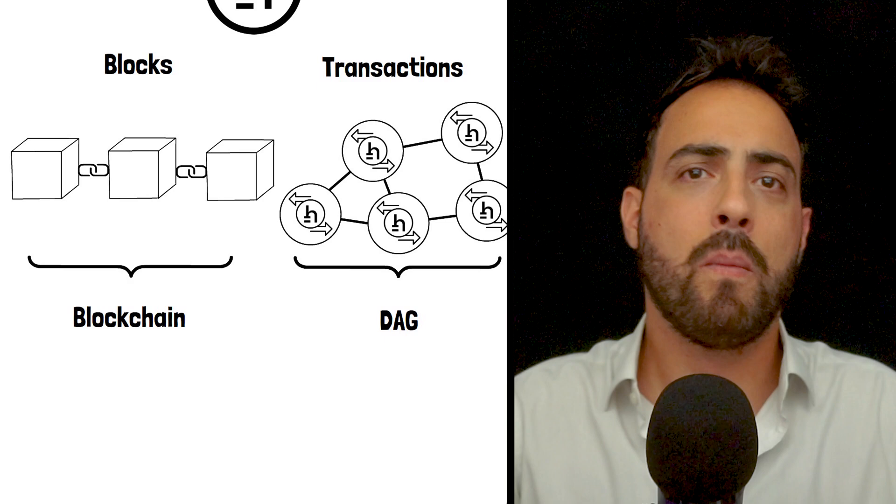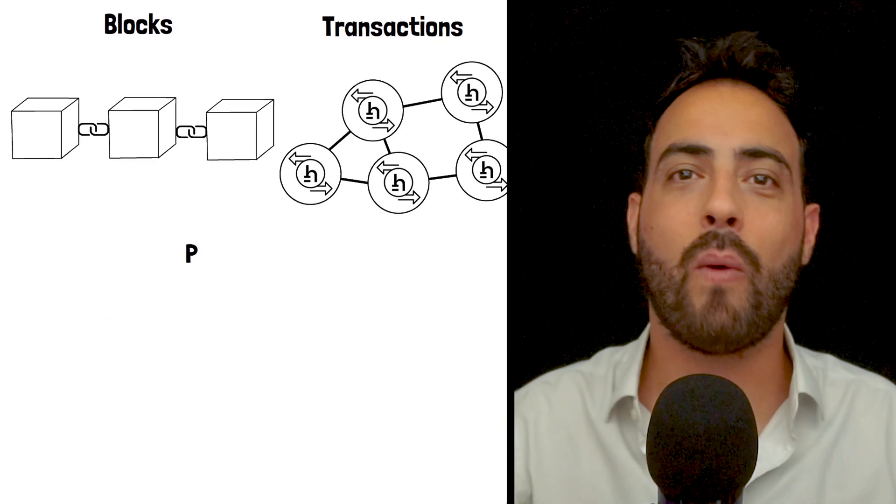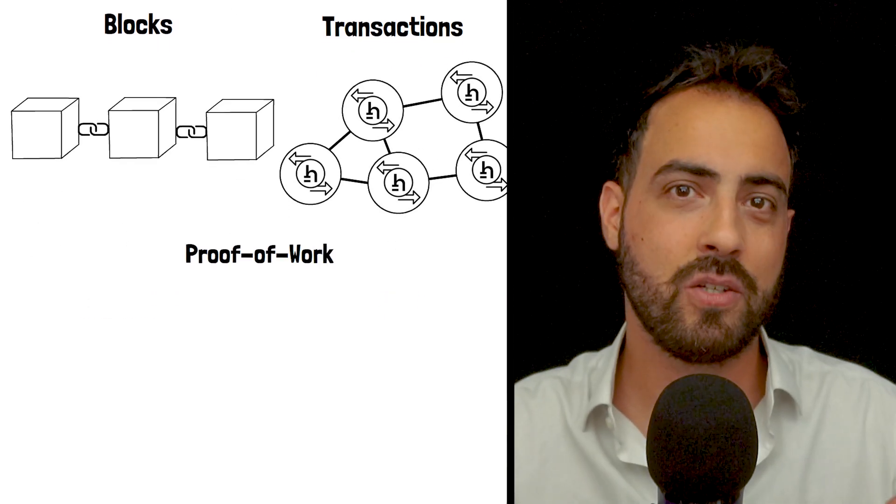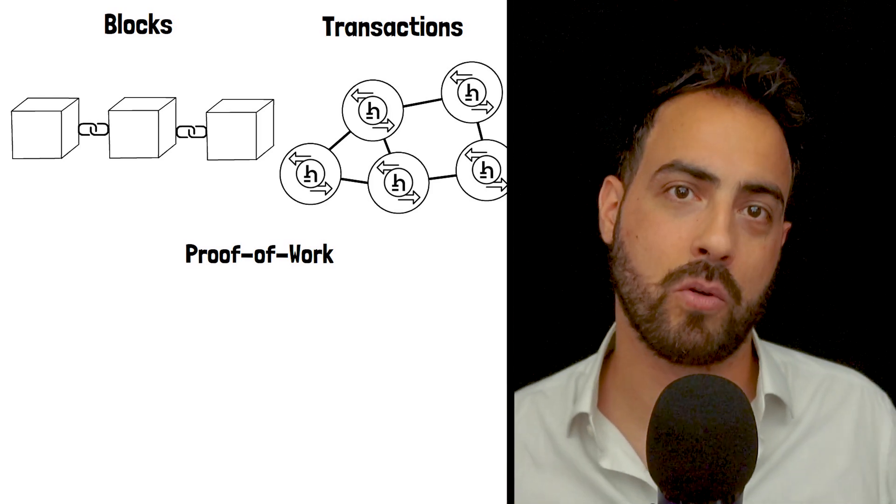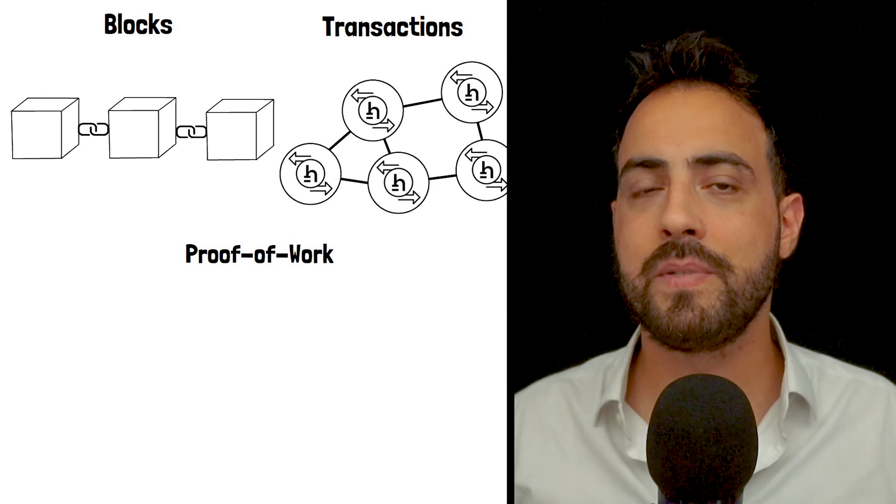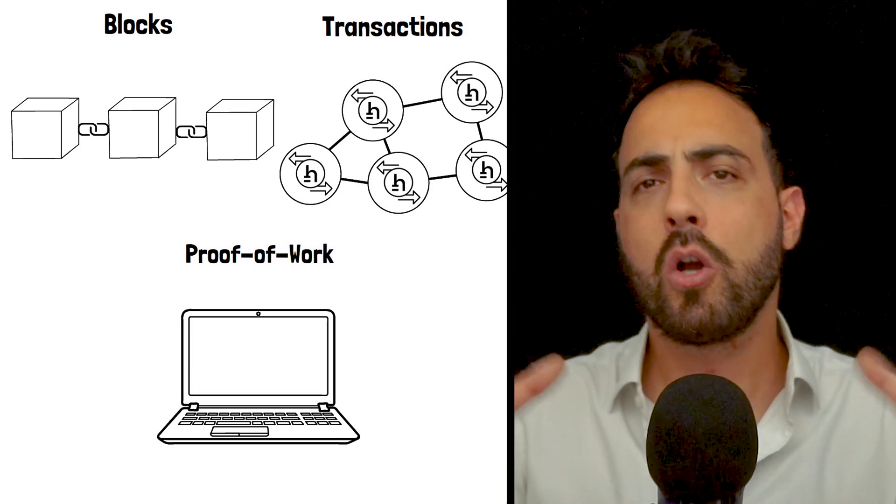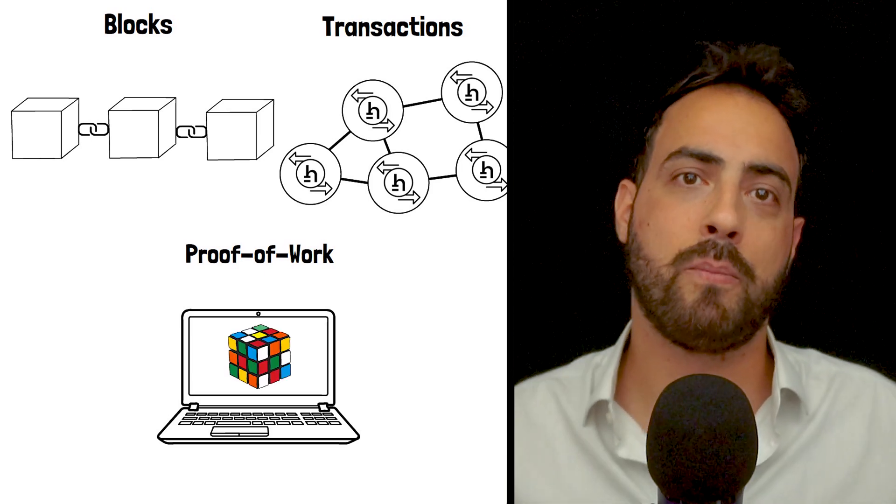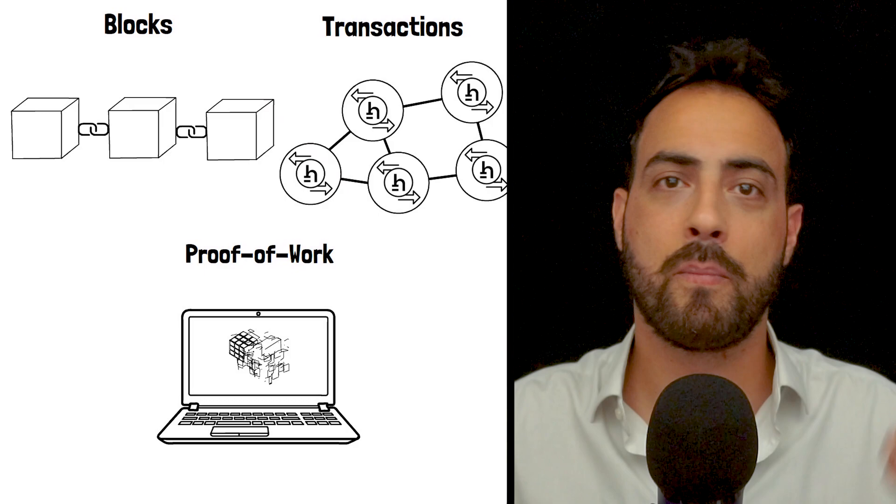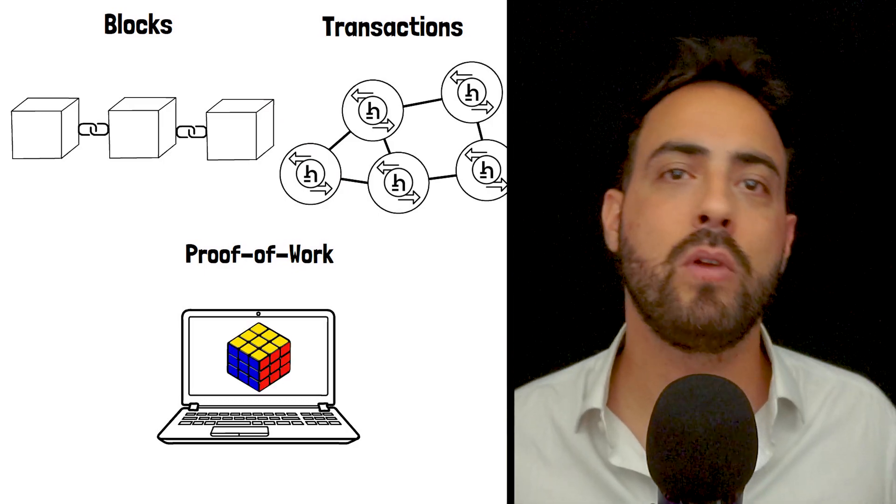Here is where it gets interesting. Both blocks and transactions require proof-of-work, but transactions have a much lower difficulty than blocks. Under proof-of-work systems, miners, which is a fancy way to say computers, compete to solve a complex mathematical problem, with the first miner to solve the problem getting rewarded with newly minted cryptocurrency.